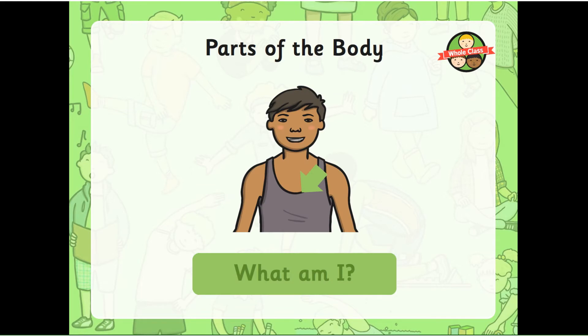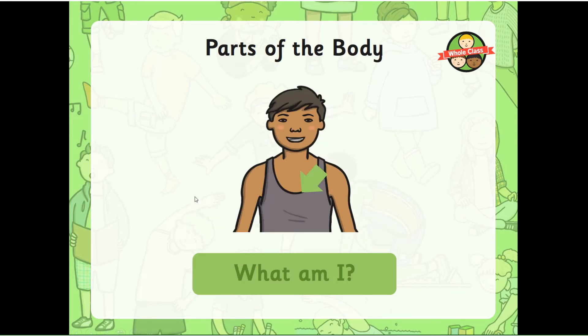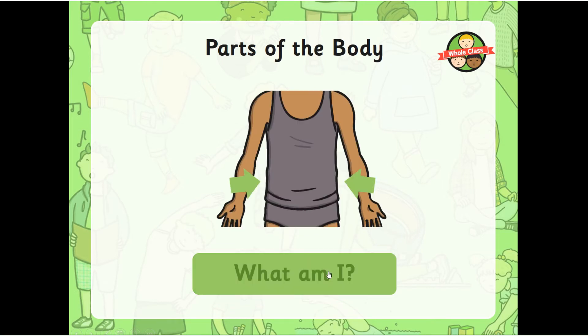What am I? This is the front part of your body. It's your chest. What am I? This is your waist. If it was in the middle you might say that's your tummy or your stomach.